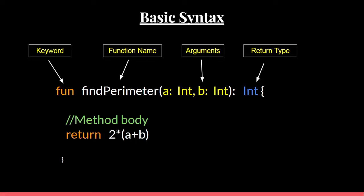This is pretty simple. If you have a background in any coding language, things are just shuffled a bit. Taking Java as an example — in Java we have the return type before the name of the function, whereas here we have the return type at the end. Otherwise things are quite similar.